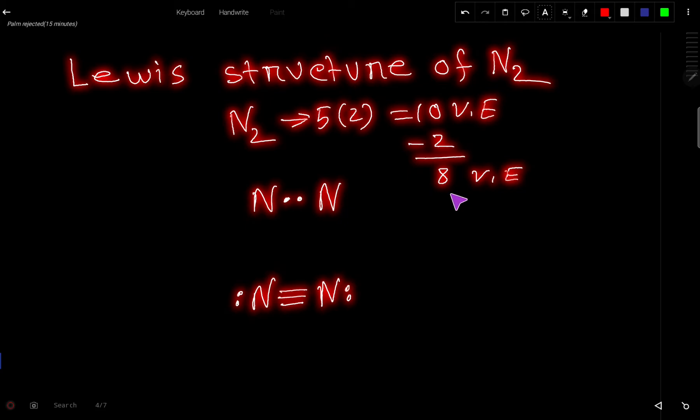These 8 valence electrons will be used to satisfy the octet for both nitrogens. This nitrogen has 2, so it can maximum take 6 valence electrons. So after putting 6 valence electrons for this nitrogen, we have 2 valence electrons left that will come here.